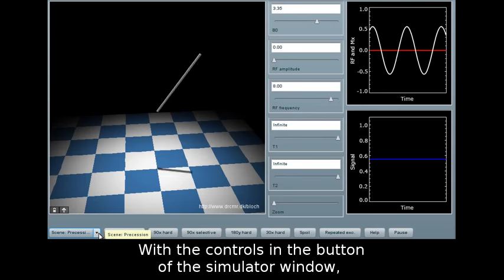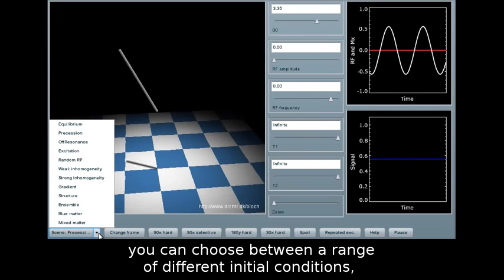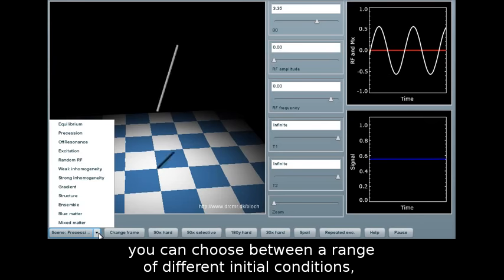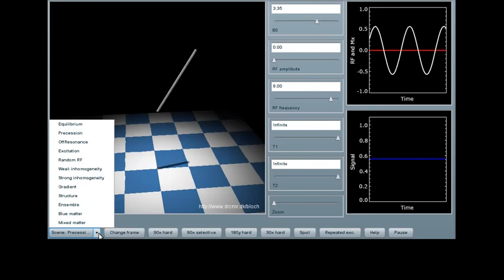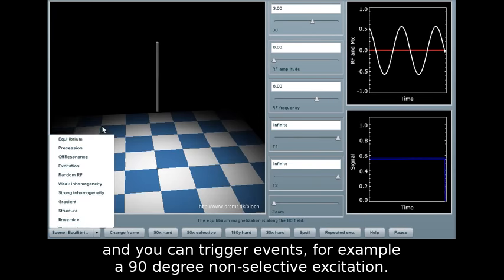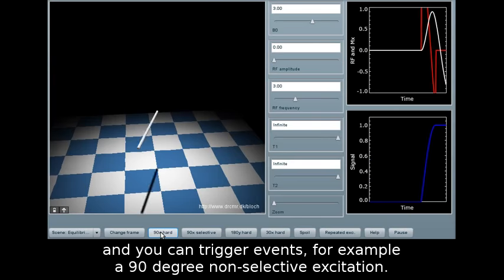With the controls in the bottom of the simulator window, you can choose between a range of different initial conditions, for example thermal equilibrium. And you can trigger events, for example 90 degree non-selective excitation.